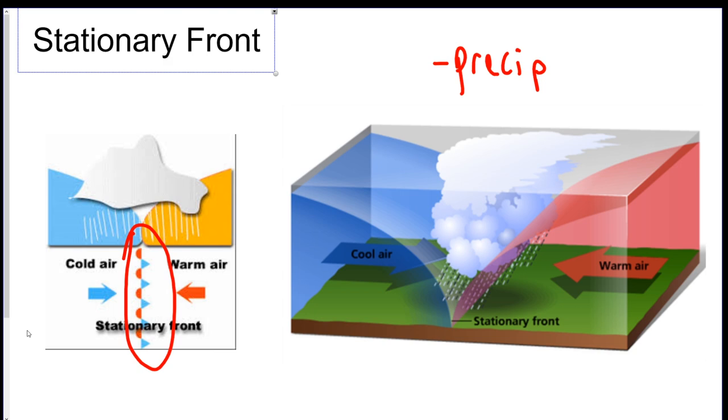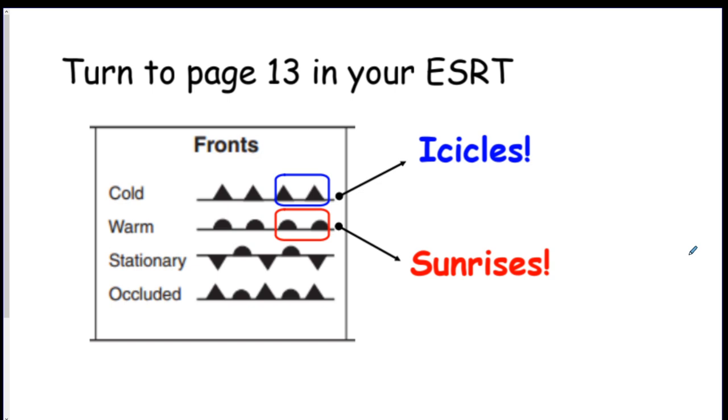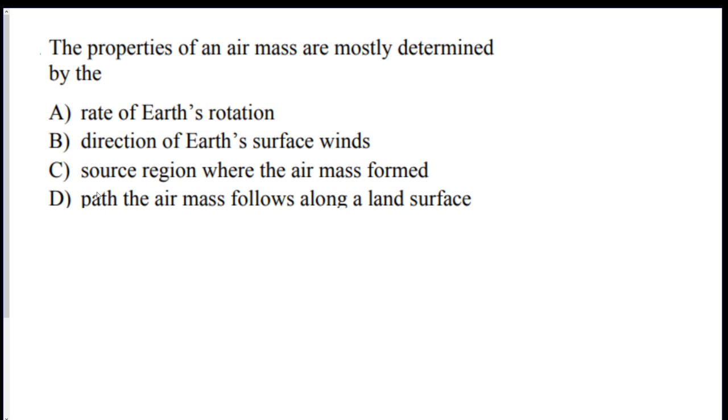This is on your reference table. It's the four front symbols so you don't have to remember it. It's on page 13. Again, it doesn't tell you what they do or anything like that but at least you have a reference as to which symbols are which. Alright. Let's see if we can get some questions. Number one. Remember, pause the video and see if you can do it and then see if you get it right. The properties of an air mass are mostly determined by what?